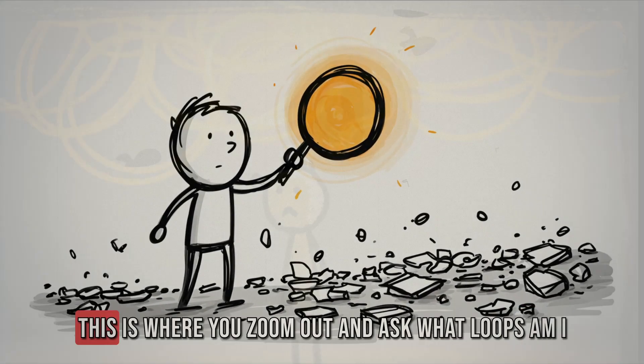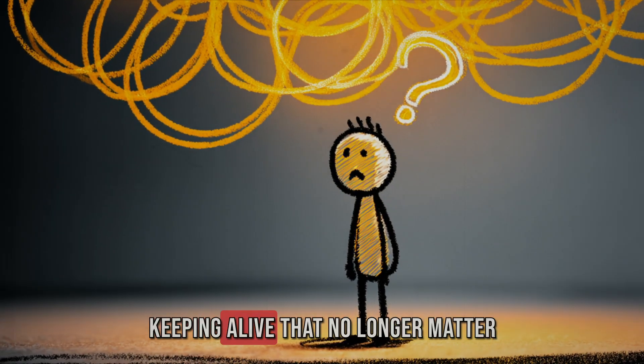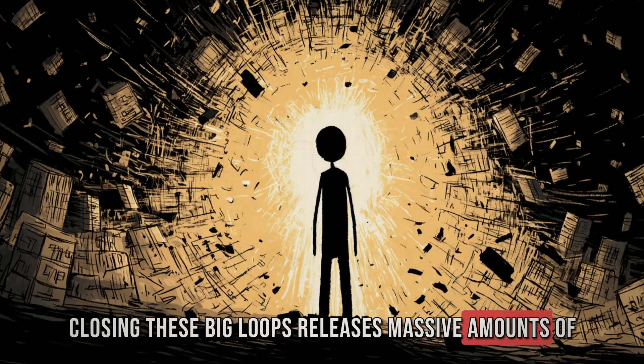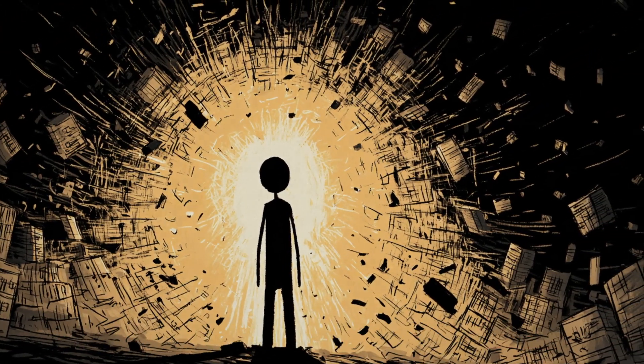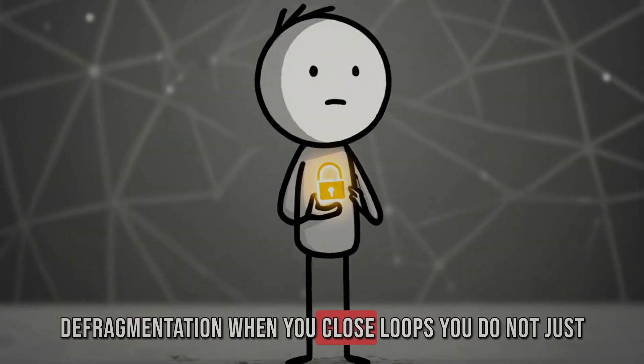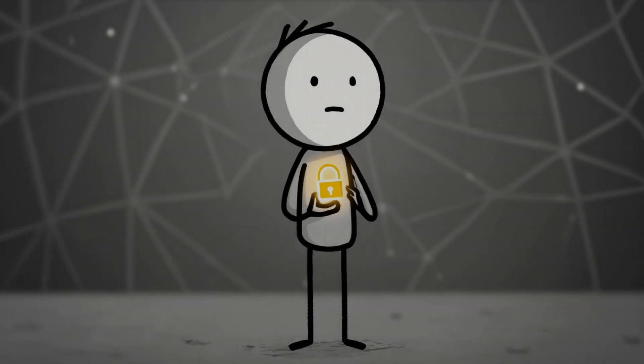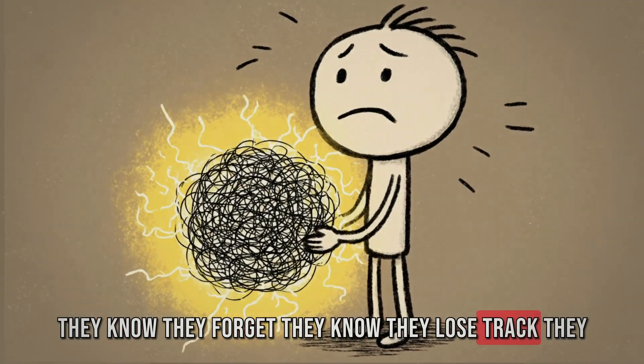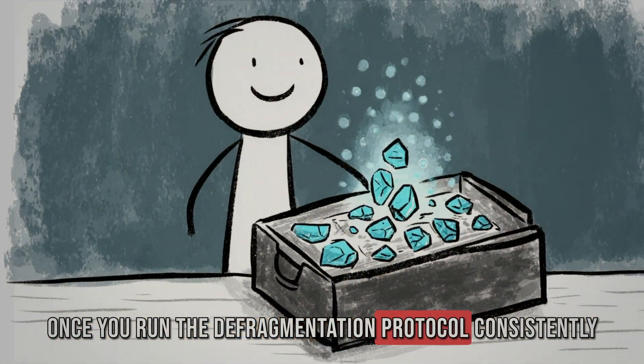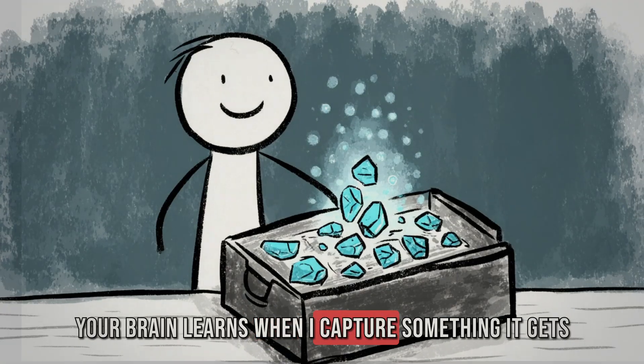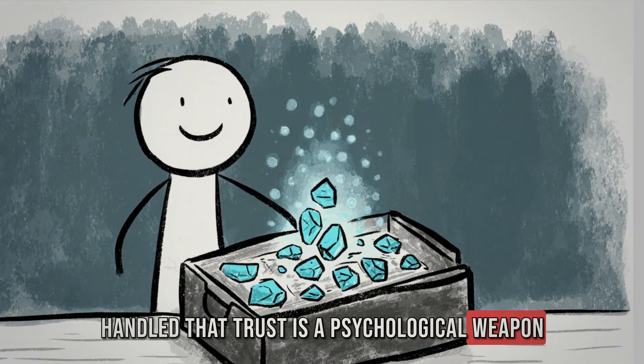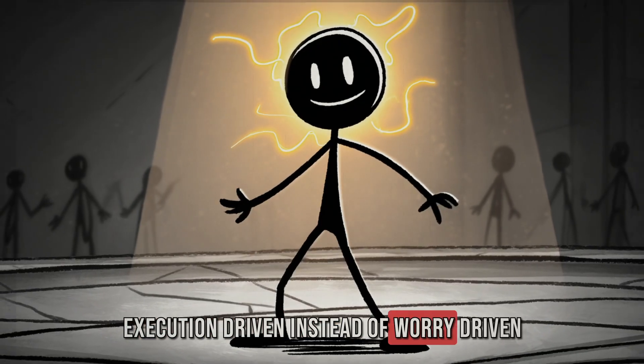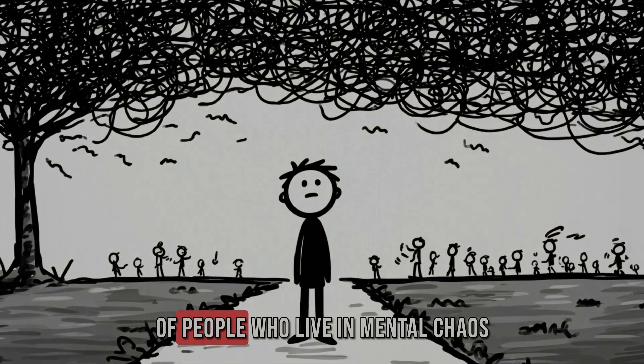Now let's talk about the hidden leverage of defragmentation. When you close loops, you do not just free energy. You create trust in yourself. The reason most people procrastinate is because deep down, they do not trust their own system. They know they forget. They know they lose track. They know they carry things for weeks. Once you run the defragmentation protocol consistently, your brain learns, when I capture something, it gets handled. That trust is a psychological weapon. It eliminates hesitation because you stop fearing things will slip through the cracks. You become execution-driven instead of worry-driven. That alone gives you an advantage over 90% of people who live in mental chaos.